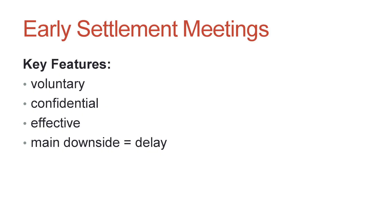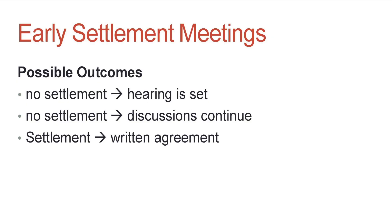Before the respondent files their response, the parties have the option of attending an Early Settlement Meeting. That will be scheduled within about three to four months of filing, though sometimes it takes a bit longer due to scheduling. If both sides want to participate, the tribunal is generally able to get one on the calendar within three to four months. An Early Settlement Meeting is an opportunity to see if you can resolve the complaint without a hearing. If you settle, the complaint is over.